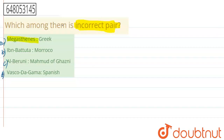The first pair says Megasthenes – Greek. The second one says Ibn Battuta – Morocco. The third one says Al Baruni – Mahmood of Ghazni. The fourth one says Vasco de Gama – Spanish.